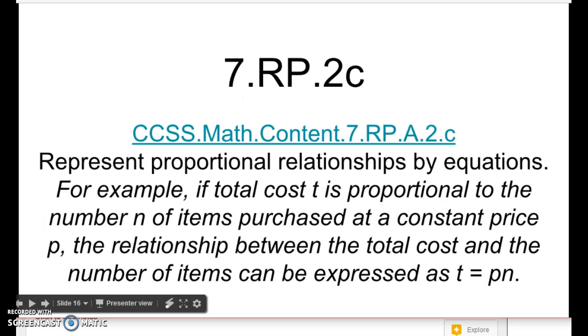And this third part is 7.RP.2c, representing proportional relationships by equations. For example, if the total cost t is proportional to the number n of items purchased at a constant price p, the relationship between the total cost and the number of items can be expressed as t equals p times n. This sounds really hard,